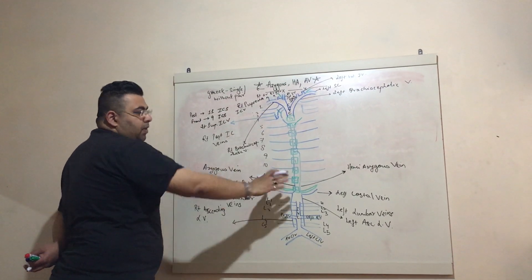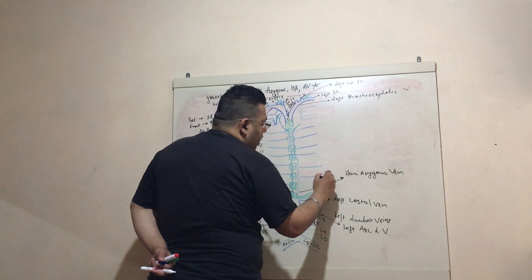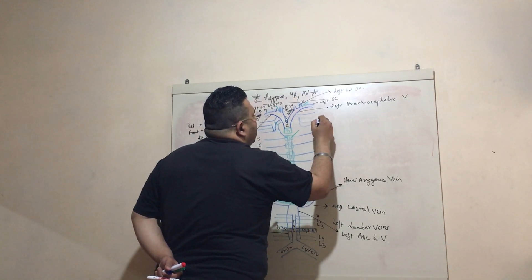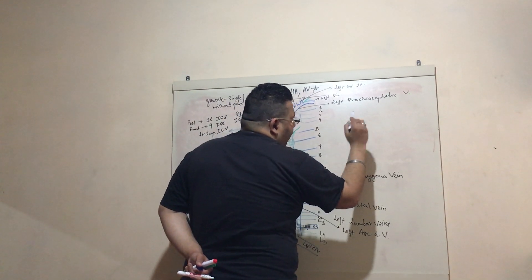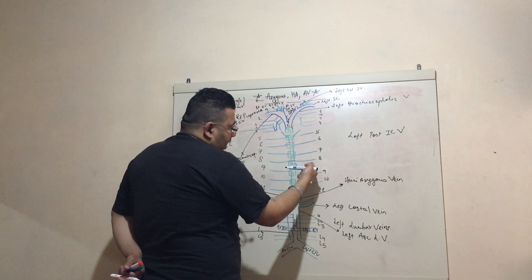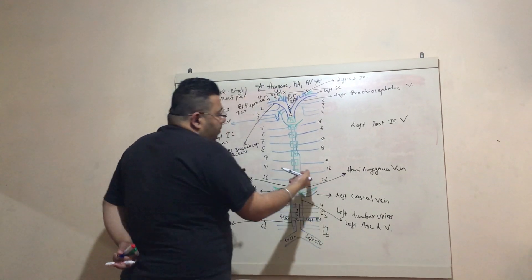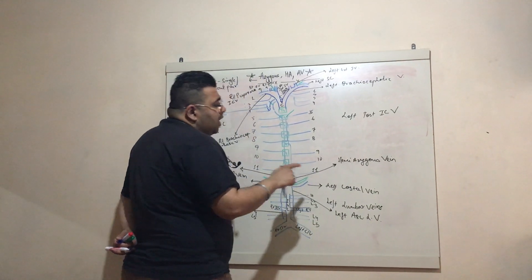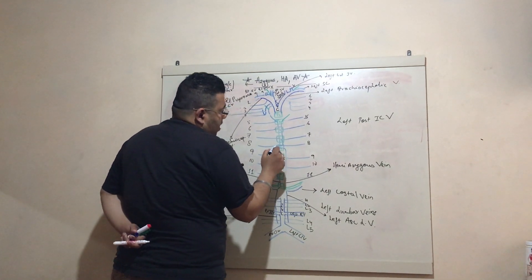On the left side we also have intercostal veins numbered 1 to 11, known as the left posterior intercostal veins. The 9th, 10th, and 11th drain directly into the hemi-azygous vein.